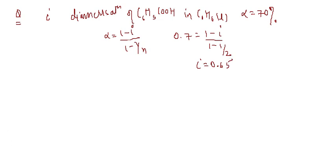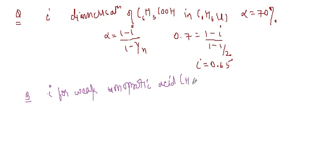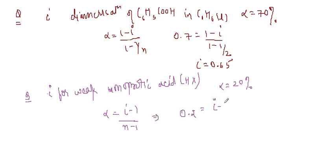Now calculate the Van't Hoff factor for a weak monoprotic acid HX with alpha = 20%, i.e., 0.2. For dissociation (n=2), using alpha = (i - 1)/(n - 1): 0.2 = (i - 1)/1, so i = 1.2. We see that for dimerization (association) i is less than 1, while for dissociation i is greater than 1, because final moles decrease in association and increase in dissociation.